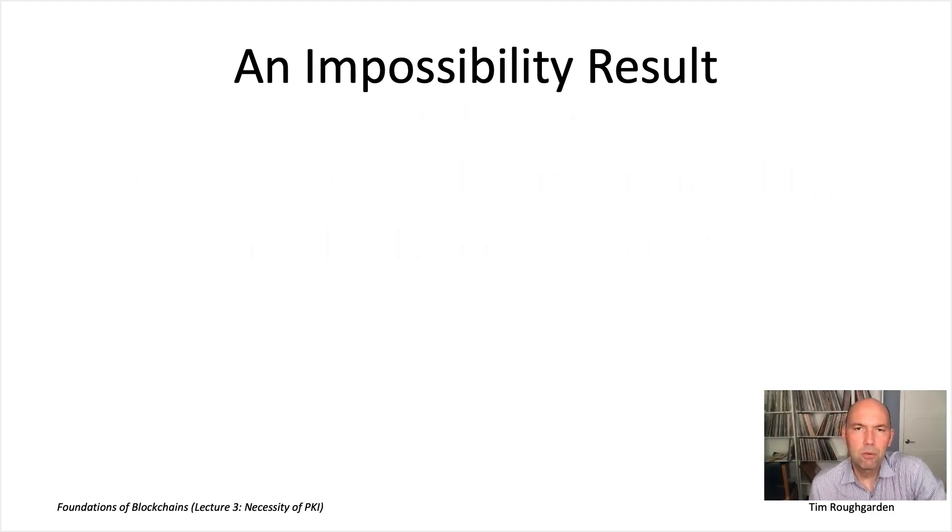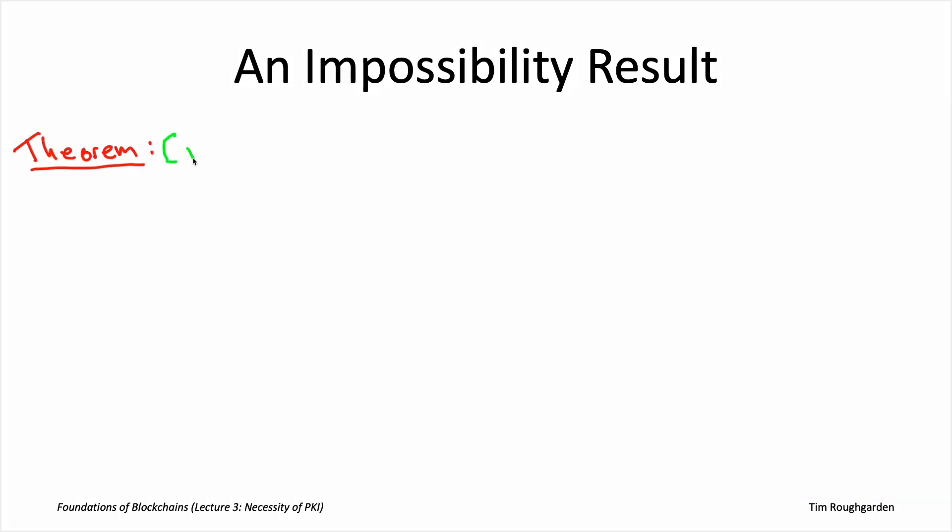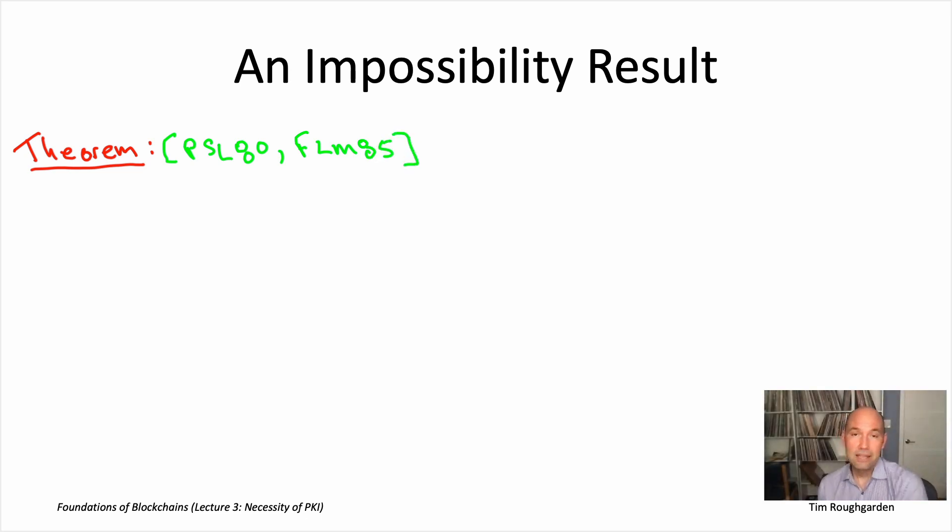All right, so let me tell you the impossibility result that we're actually going to prove in this lecture. This is another super classic result from distributed computing from the early 1980s when a lot of the foundations of that field were being laid. The result we'll talk about was basically proved originally by Pease, Shostak, and Lamport. These are actually the same three authors of the paper we mentioned last lecture that introduced the Byzantine terminology, talking about the Byzantine generals coming to agreement in the presence of traitors.